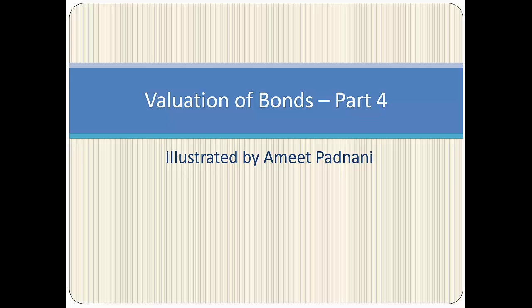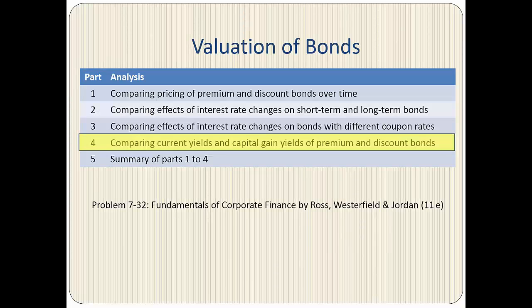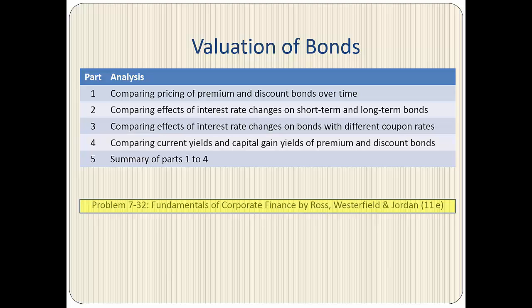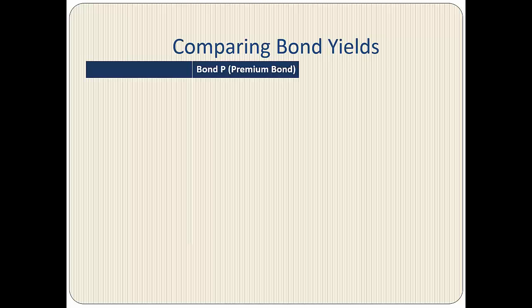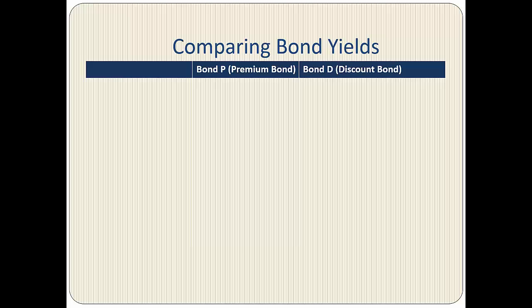Welcome to Valuation of Bonds Part 4, the fourth in a series of five videos. This is problem number 7.32 from the Fundamentals of Corporate Finance. We are going to learn and compare different types of yields on two bonds. Bond P is a premium bond, meaning it's selling at a price above par value, whereas Bond D is a discount bond, meaning it's selling at a price below par value.